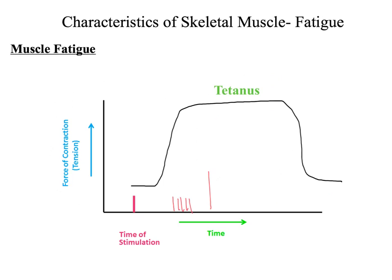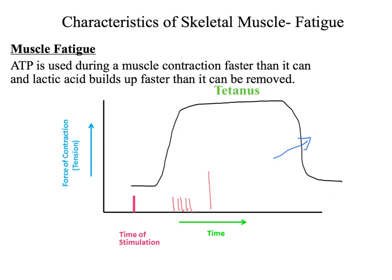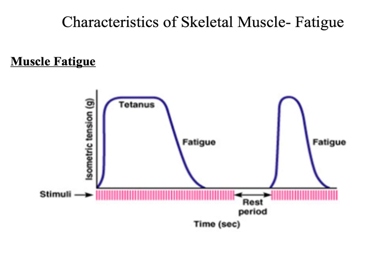At some point in time, the muscle contraction will rapidly decrease. This is known as muscle fatigue. During muscle fatigue, ATP is used during a muscle contraction faster than it can be produced, and lactic acid builds up faster than it can be removed. Looking at a graph, an increase in frequency of stimulus generates a maximum force of contraction called tetanus, which results in fatigue — the depletion of ATP.